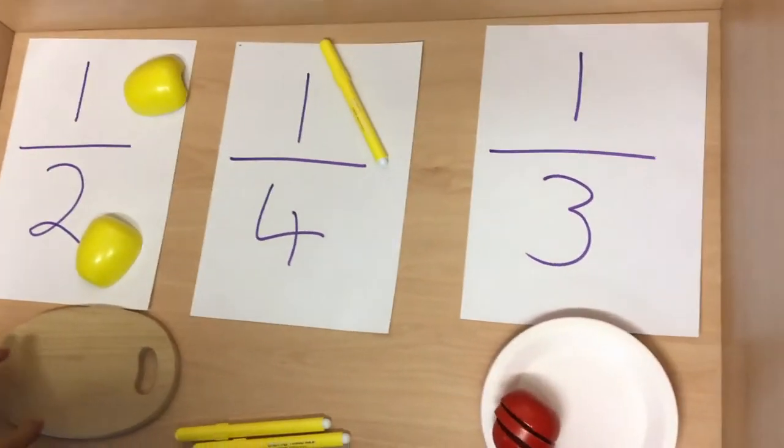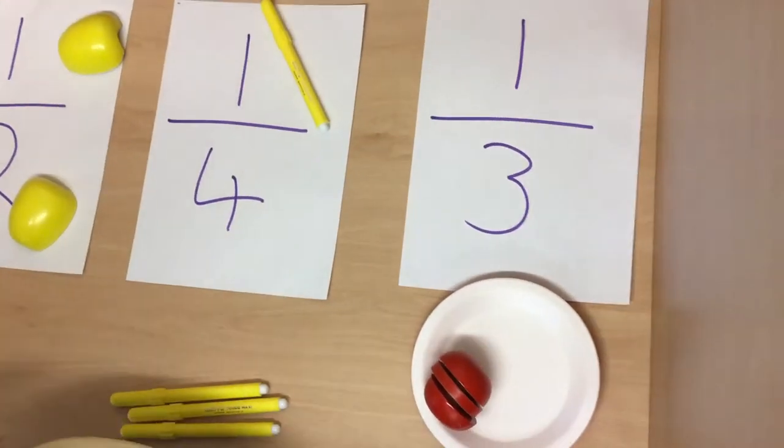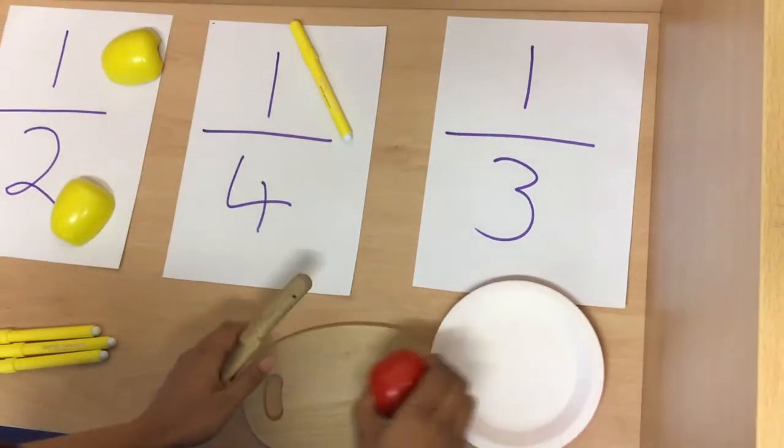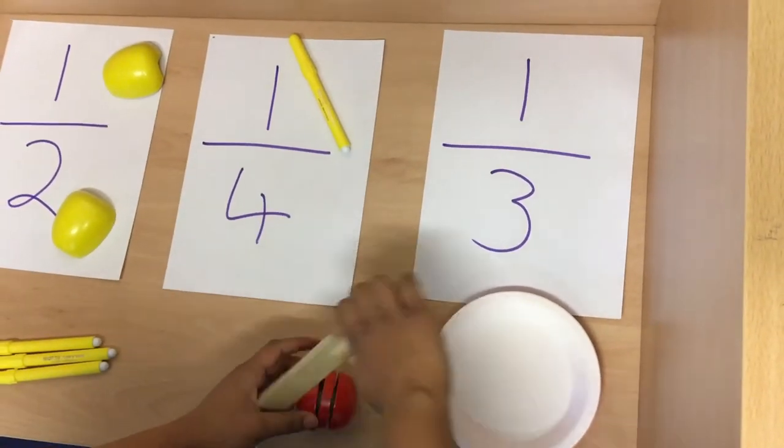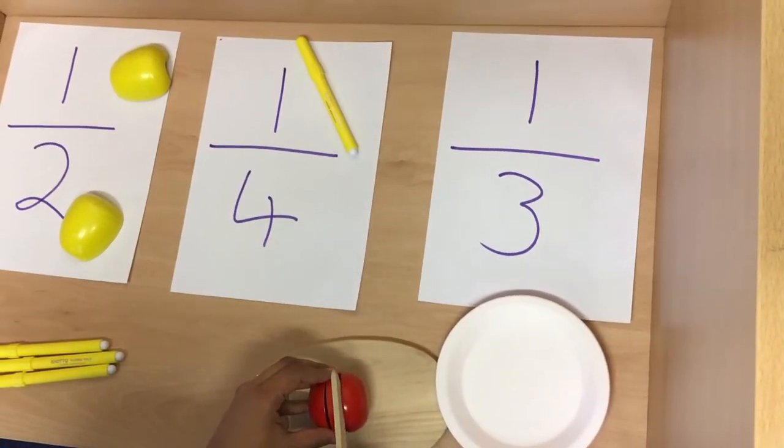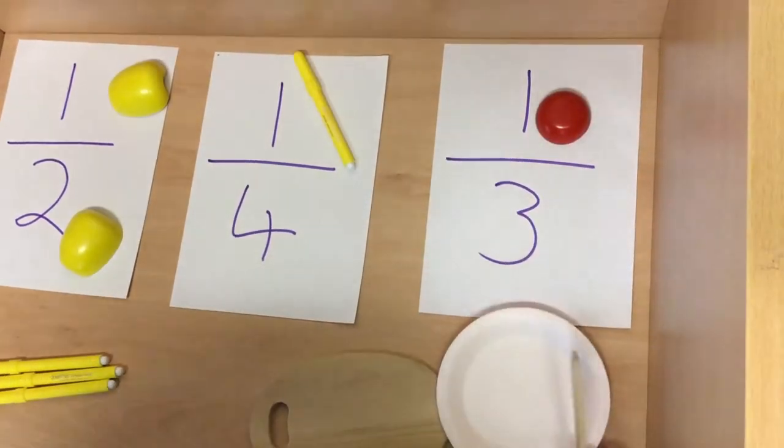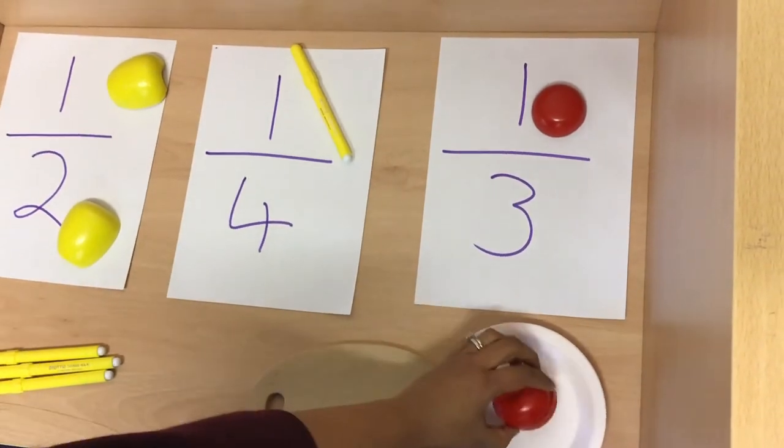Likewise, if I was doing a third, I would have three parts in total of which I would need one. So I would cut this lovely juicy tomato into three equal parts. One third would be one out of the three.